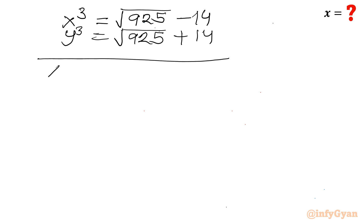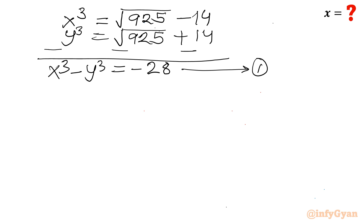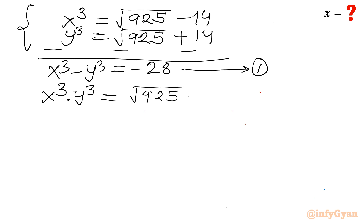Now I will subtract the first equation from the second. We have x³ = √925 − 14 and y³ = √925 + 14. Subtracting gives x³ − y³ = −28. Let's call this equation one. Now let us also check the product x³ × y³ = (√925 − 14)(√925 + 14).